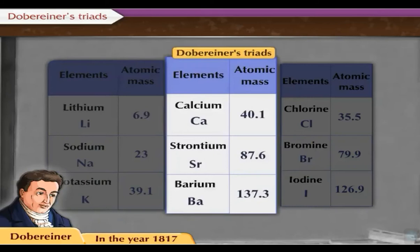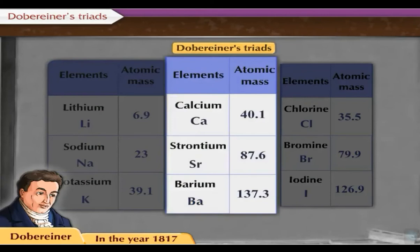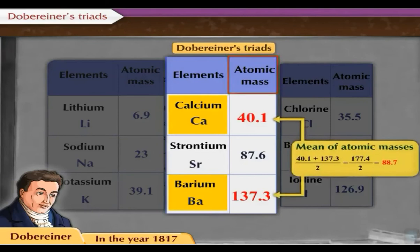The elements calcium, strontium, and barium form a triad. The atomic mass of calcium is 40.1 and the atomic mass of barium is 137.3. The mean of their atomic masses is 88.7, and it is equal to the atomic mass of strontium, which is 87.6.